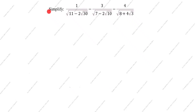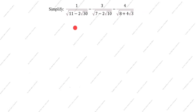Hi friends, welcome to my channel 'Excellent Ideas in Education.' Today we are going to solve this problem: simplify 1 divided by root of (11 minus 2 root 30), minus 3 divided by root of (7 minus 2 root 10), minus 4 divided by root of (8 plus 4 root 3).